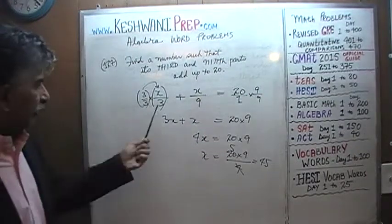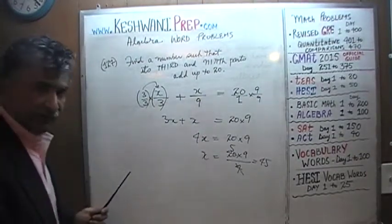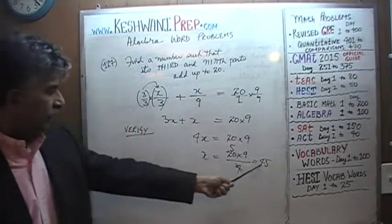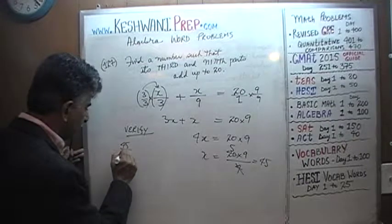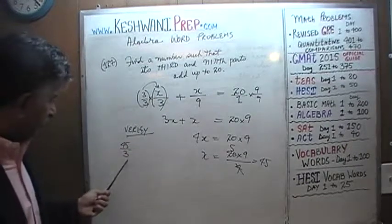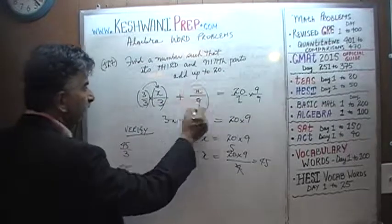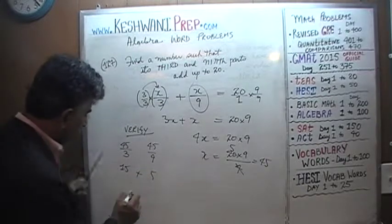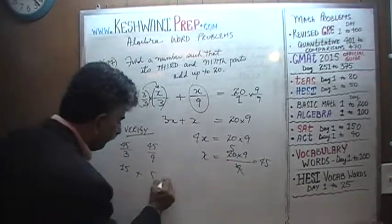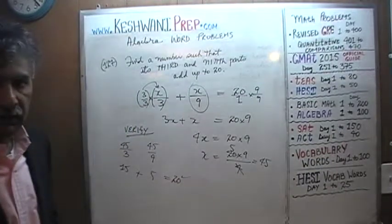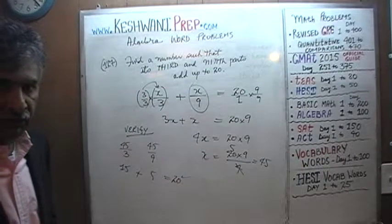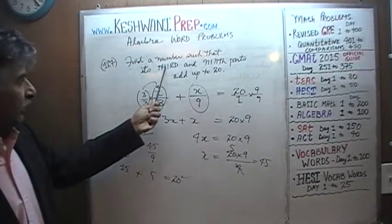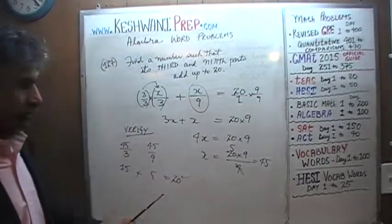The last thing we have to do is verify our work — it only takes a few seconds. We are claiming the unknown quantity X is 45. A third of 45 is 15, and a ninth of 45 is 5. Do 15 and 5 add up to 20, as the problem tells us they should? The answer is yes — the third and the ninth part of the number do add up to 20, which means our answer is correct.